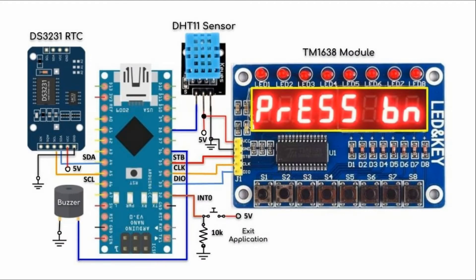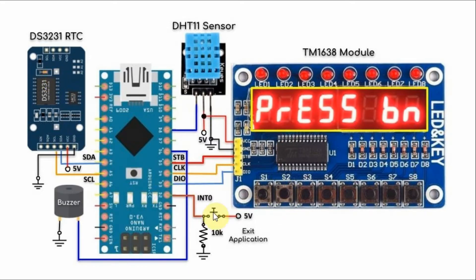A circuit diagram of the implemented system is shown here. When we press S1 on the TM1638 module, the time will be displayed coming from the DS3231 RTC. Pressing S2 will display the date from the DS3231. Pressing S3 will display the temperature and humidity from the DHT11 sensor. Pressing S4 will display a stopwatch and the buzzer will provide the ticking sound for the stopwatch.